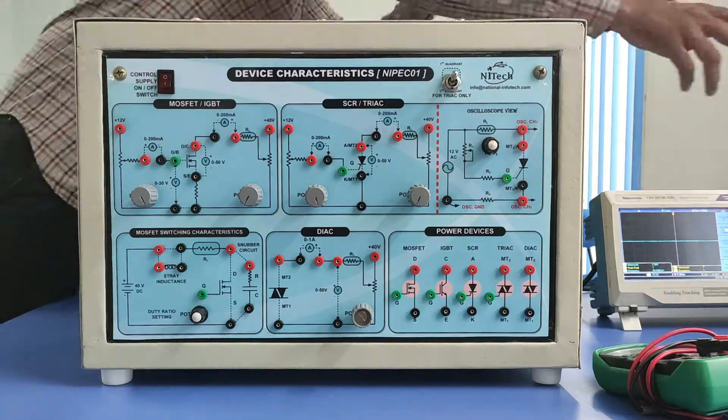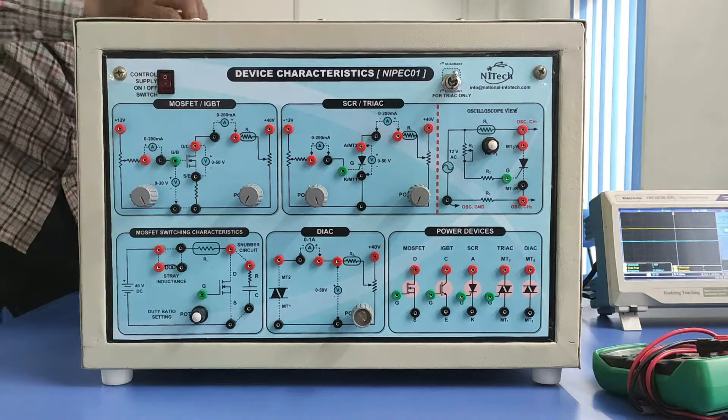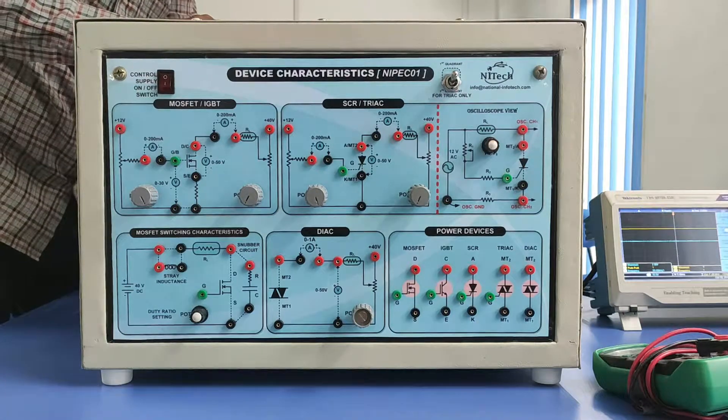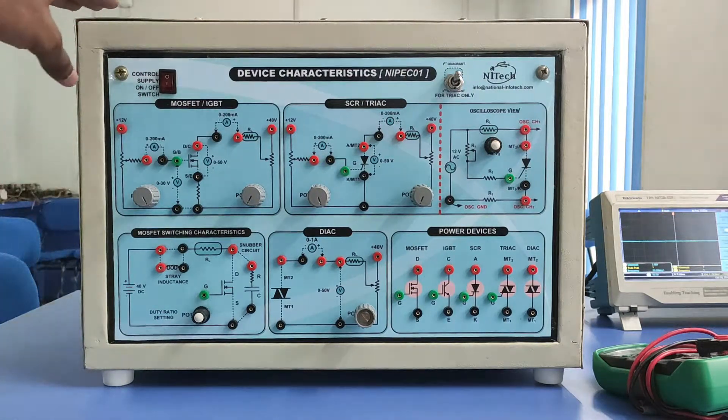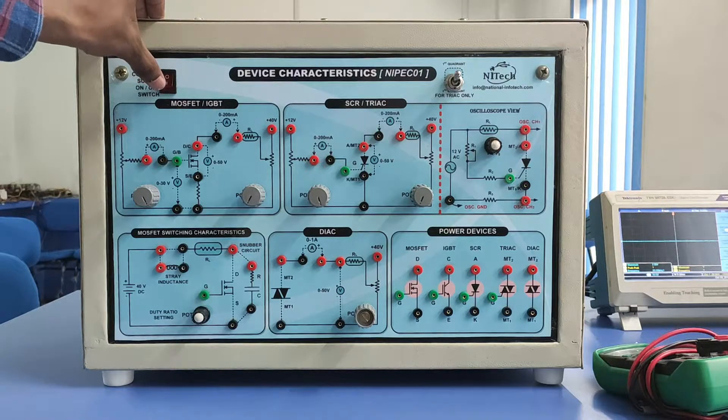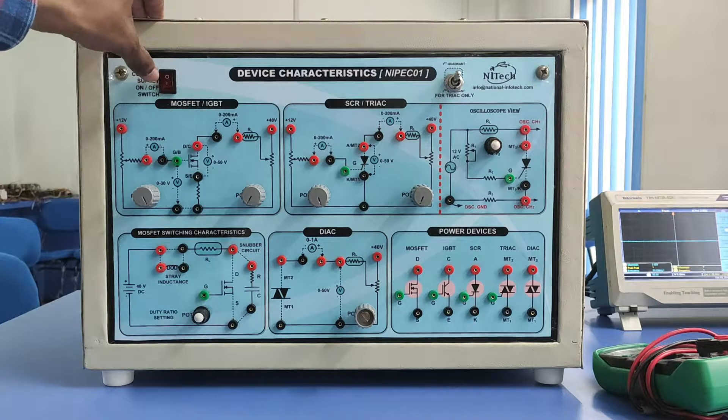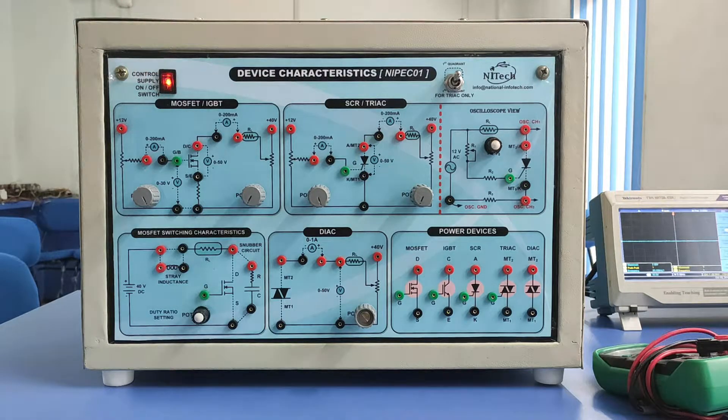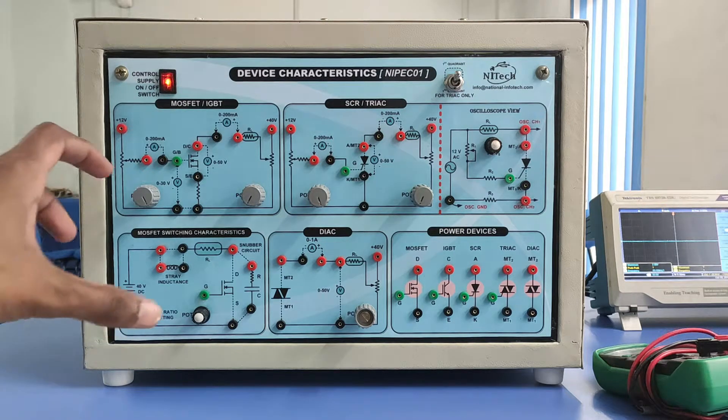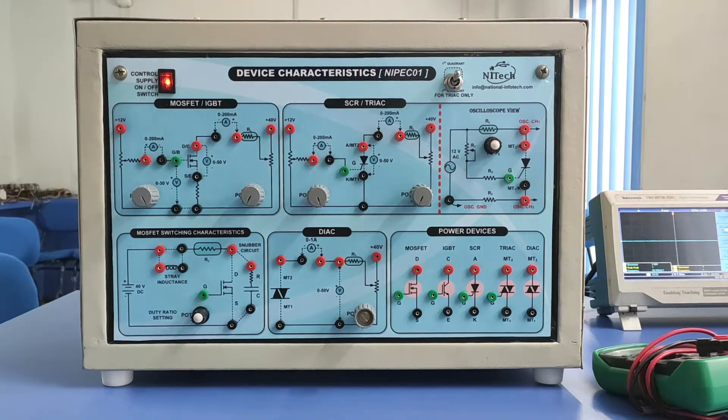After inserting the mains cord wire to the back side of the kit, we can make it on by pressing this rocker switch. Currently it is in off condition. There is a light indication, and this kit is energized.